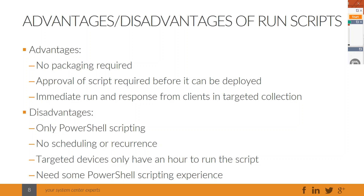When you run the script, it's basically immediate execution on your target clients via the fast client notification channel, and you get an immediate response from clients in the targeted collection. For example, if malware is related to SMB 1.0 being enabled, you can run a script to turn that off very quickly — no need to create a package and program, distribute content, deploy it, and wait for policies. This is immediate execution for clients that are online.